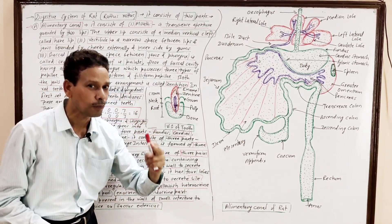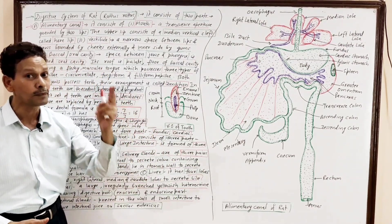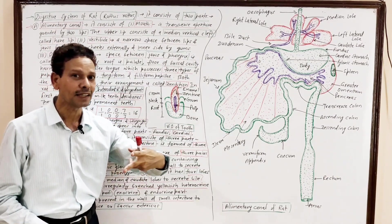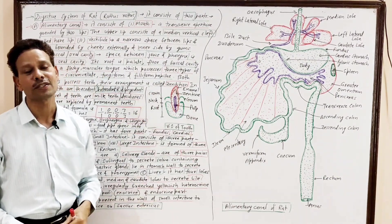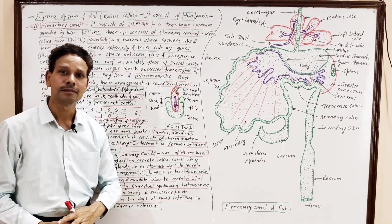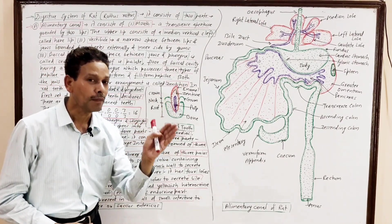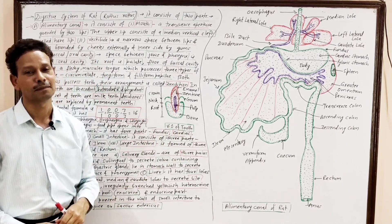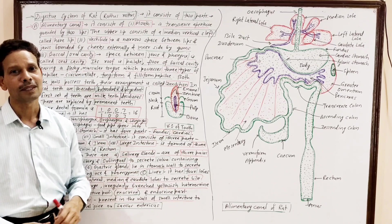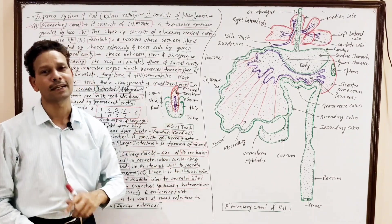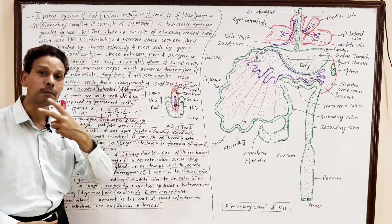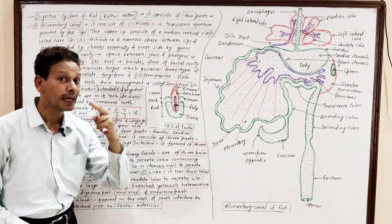Diphyodont means that in case of RAT, teeth develop in two sets. The first set is the primary set, that is deciduous teeth — these are the temporary or milk set. These are replaced by the permanent set. The arrangement of teeth in both jaws is named dentition.